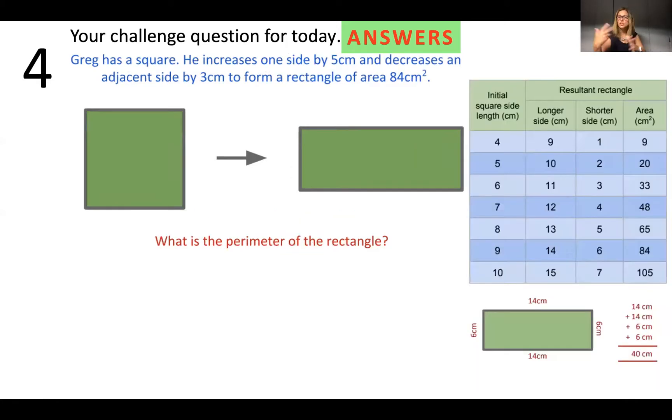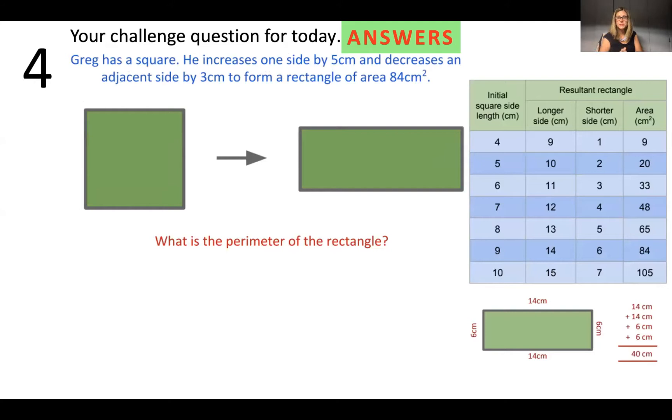Other ways you could have done it. You could just have a go with trial and improvement. And this is one way of doing it by starting with a side length of four, five, six, seven, and seeing what works. And then you'll see here that the solution is this one, a square length of nine. 14 is after you've added five. Six is after you've subtracted three. And it gives you 84 as the area.